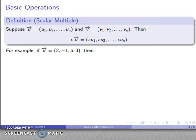So for example, if my vector, if I have a 4-vector, if I have a (2, -1, 5, 3) component vector, a 4-tuple, then I might take a look at 2 times that vector. Well, that's going to be 2 times each of the individual components.